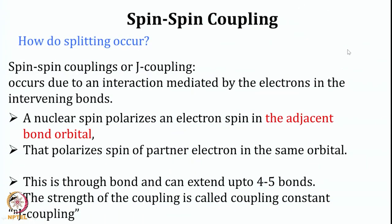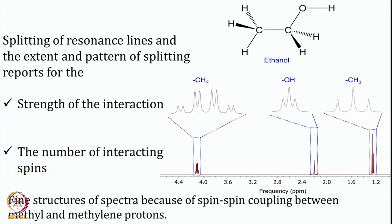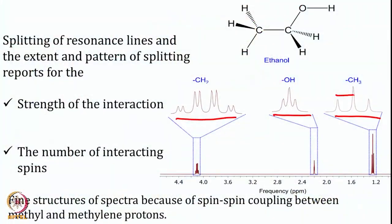In the high resolution spectrum, the one line of methyl proton is not actually one line — it is split into three lines. In case of methylene, it is also split into many lines, and similarly OH also splits into many lines. The splitting of this resonance and the extent of this splitting, the strength of this splitting, reports what is the strength of interaction between various spins and how these spins are interacting. This splitting pattern helps us in identifying the fine structure of a molecule, because the spin-spin coupling between the methyl and methylene proton tells the neighboring group effect, and this is due to J coupling or spin-spin coupling or scalar coupling.